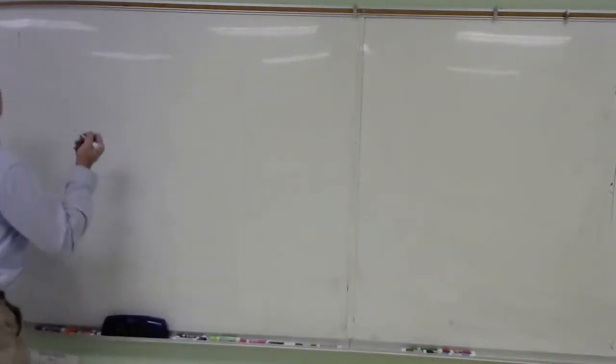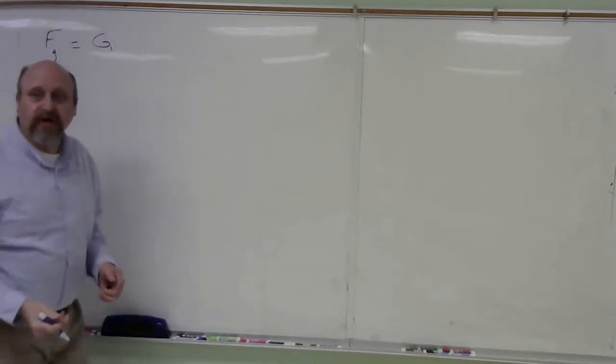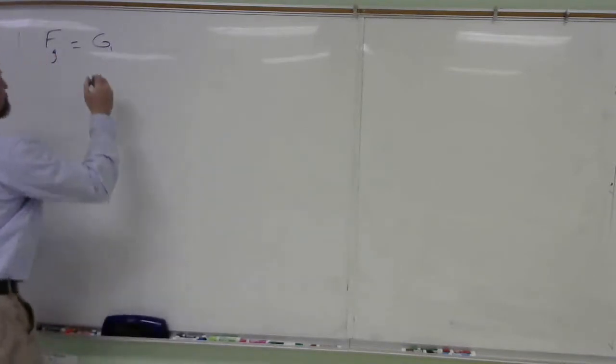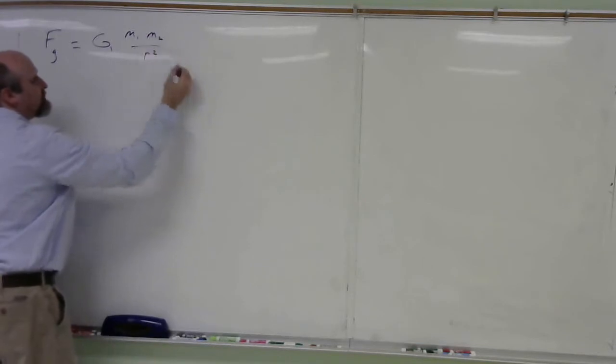So let's do the gravitational force calculation first. And so we say, well, my gravitational force is going to be given by Newton's Law of Universal Gravitation. So we'll say, okay, big G, mass of the first object, mass of the second object, divided by the distance between them squared.